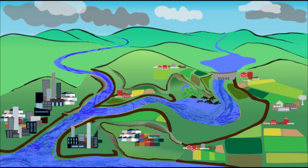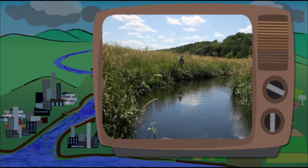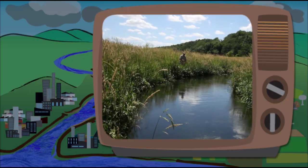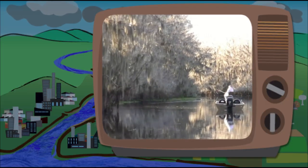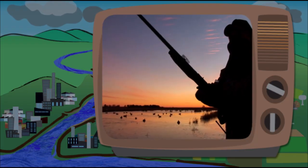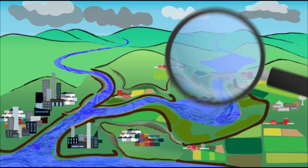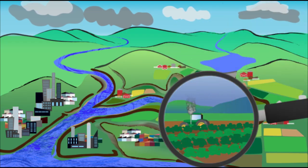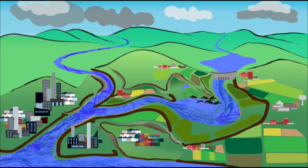These areas not only provide room for flooding, but also help to filter and clean water. They serve as nurseries for fish, birds and other species, so the rivers have more wildlife — wildlife that is often an important source of food and recreation for local communities. In some cases, farmers may continue to grow crops on the land, particularly those crops that are more flood tolerant. But in other cases, they may choose to restore the floodplain to its natural state.